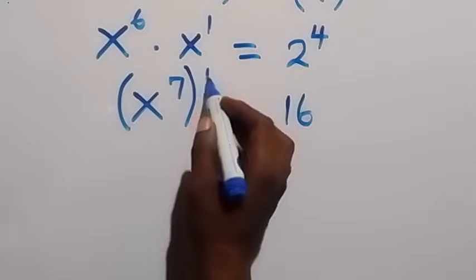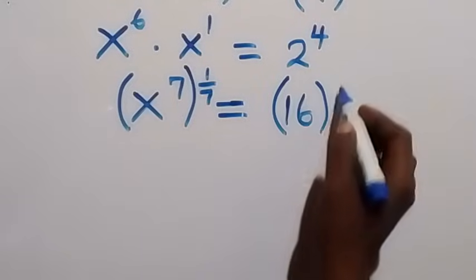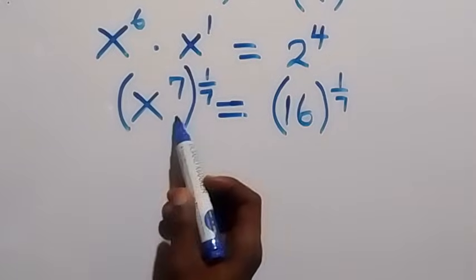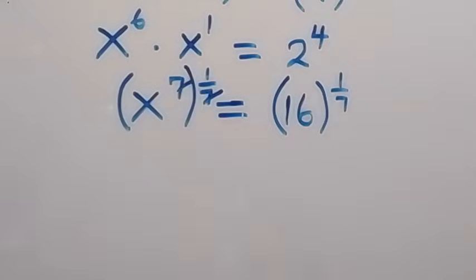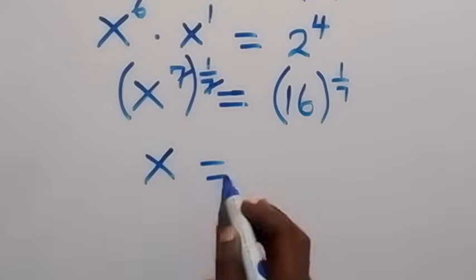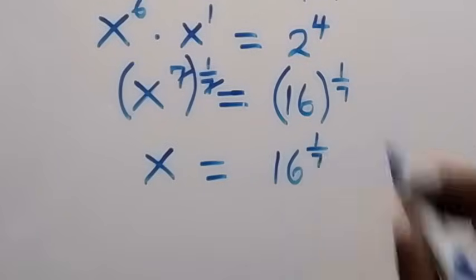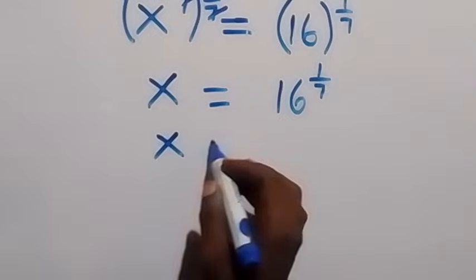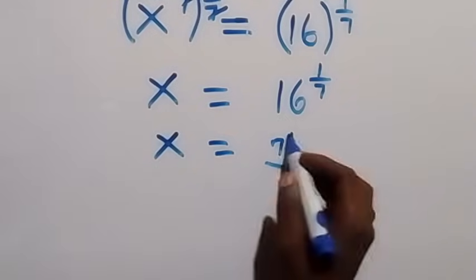From here we raise both sides to the power of 1 over 7. The 7 cancels on the left and we have x equals 16 raised to power 1 over 7, which we can also write as the 7th root of 16.